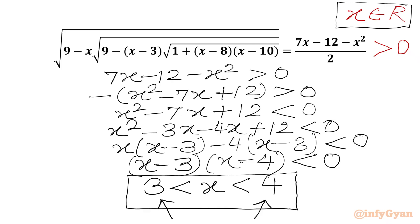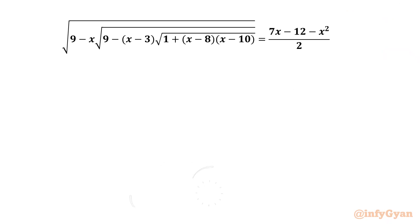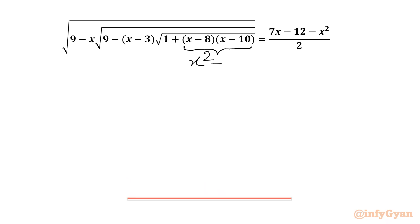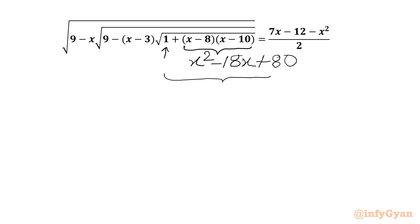Now we have to solve our equation. We can write x squared minus 10x minus 8x, giving minus 18x, and minus 8 times minus 10 gives us 80. Now we have one also, so in total the radicand part becomes x squared minus 18x plus 81, which is a perfect square of x minus 9.